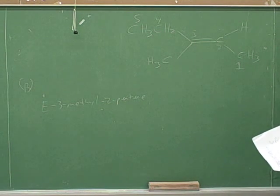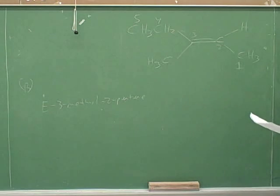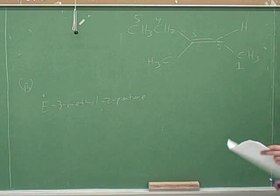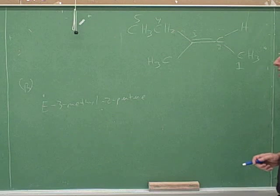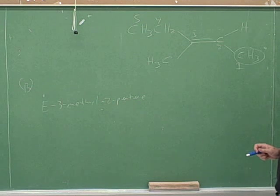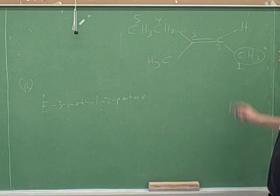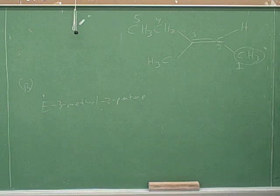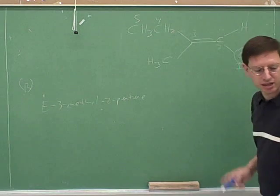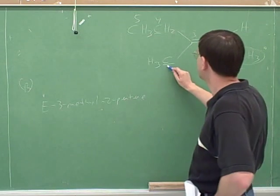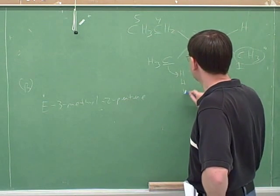Why is that? I mean, like E or Z. Right. Because the priorities are on the opposite sides. Right. Is that what you're saying? Yeah, because there's two carbons and there's only one.